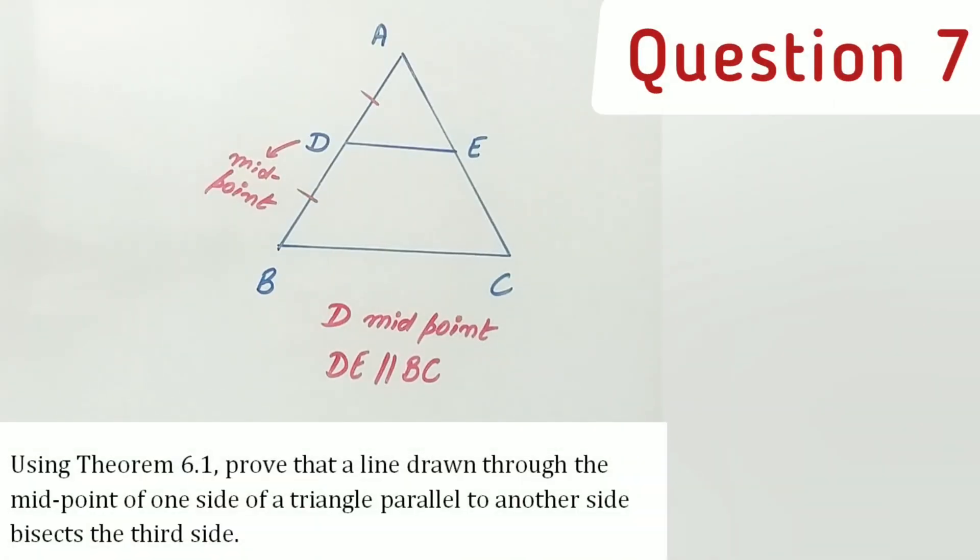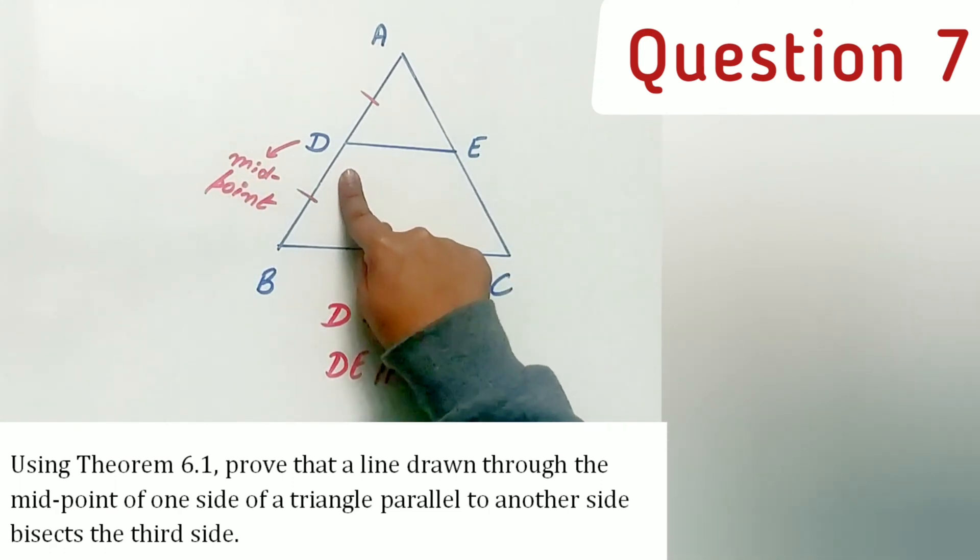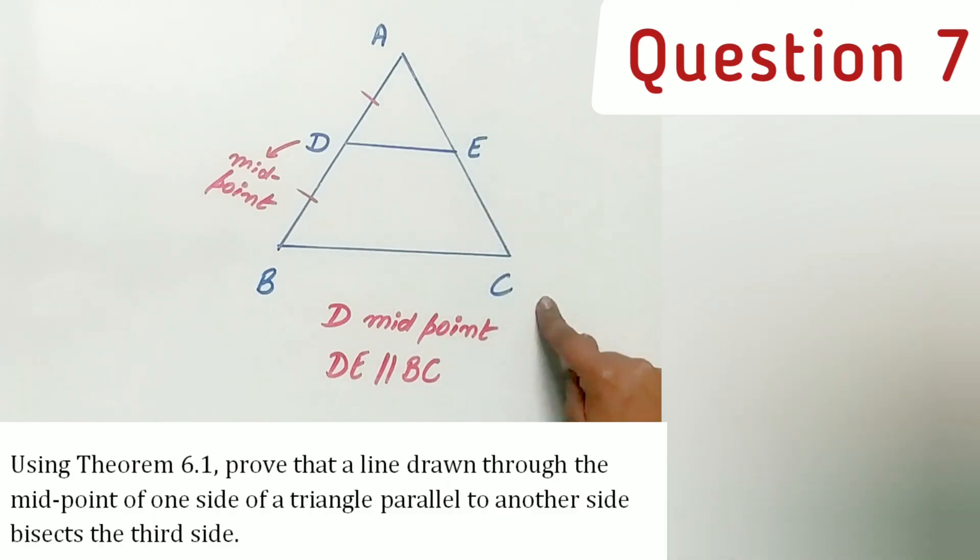Using theorem 6.1, prove that a line drawn through the midpoint of one side of the triangle parallel to another side bisects the third side.